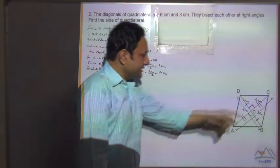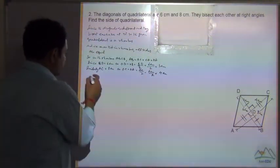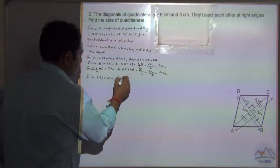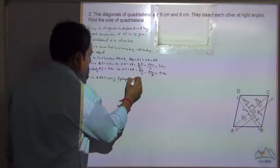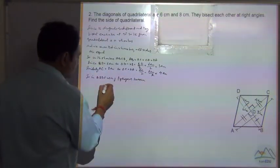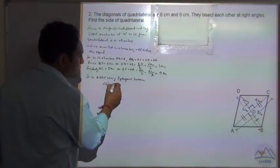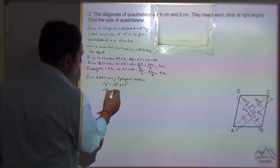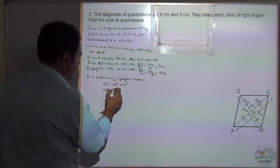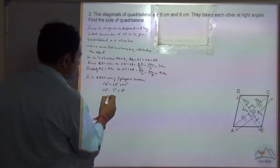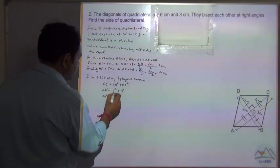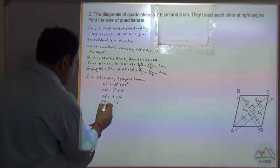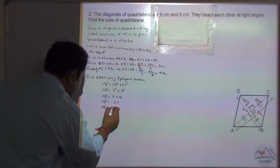So in triangle ODC using Pythagoras theorem, CD square is equal to OD square plus OC square. CD square equals 3 square plus 4 square, which is 9 plus 16 equals 25, and 25 we can write as 5 square.